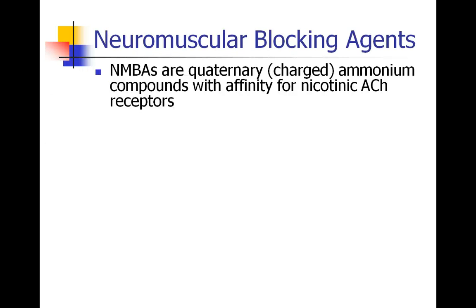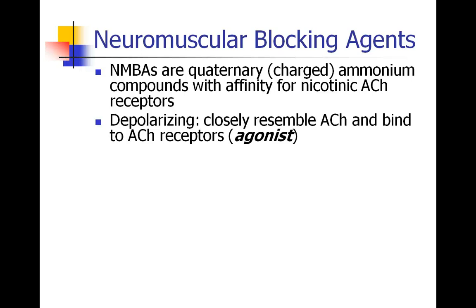When we talk about neuromuscular blocking agents, or NMBAs, these are quaternary ammonium compounds, which means they are charged and have an affinity specifically for nicotinic acetylcholine receptors. There are two kinds of neuromuscular blocking agents. There are depolarizing agents, which look an awful lot like acetylcholine itself — they bind to the acetylcholine receptors and are agonists, just like acetylcholine, generating a muscle action potential.